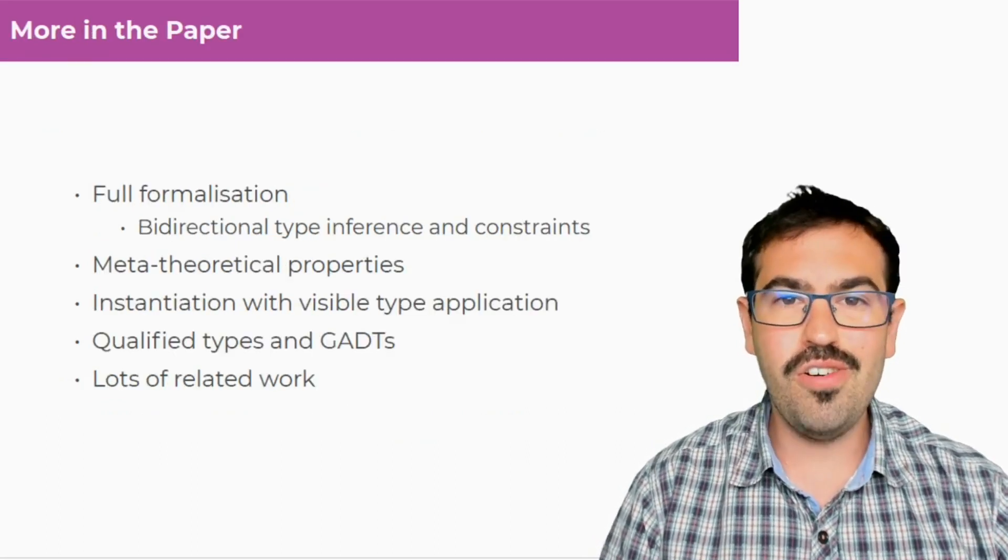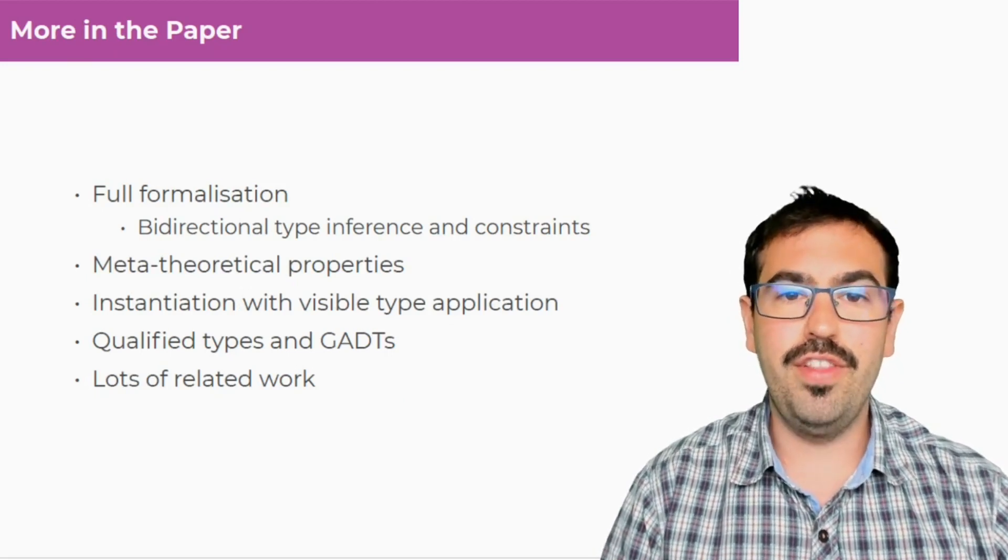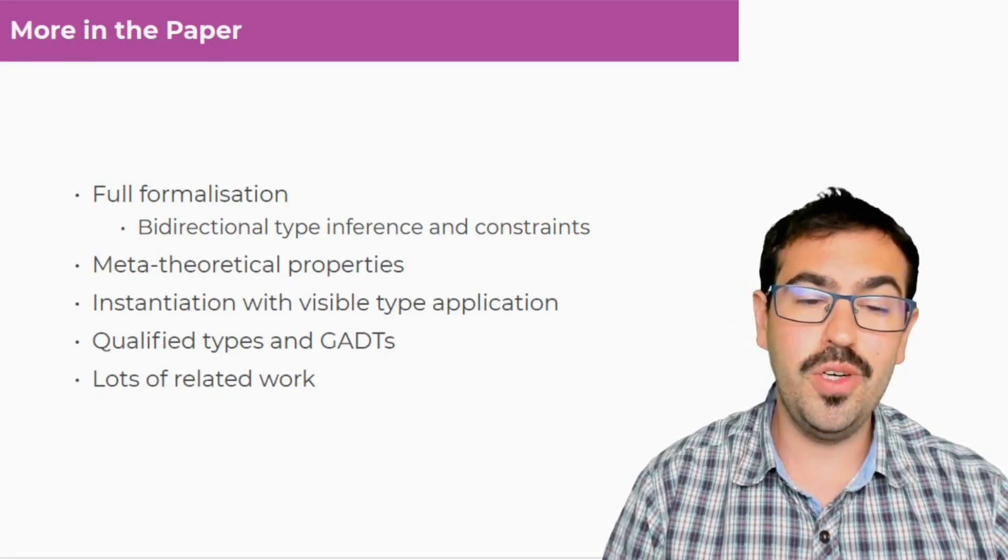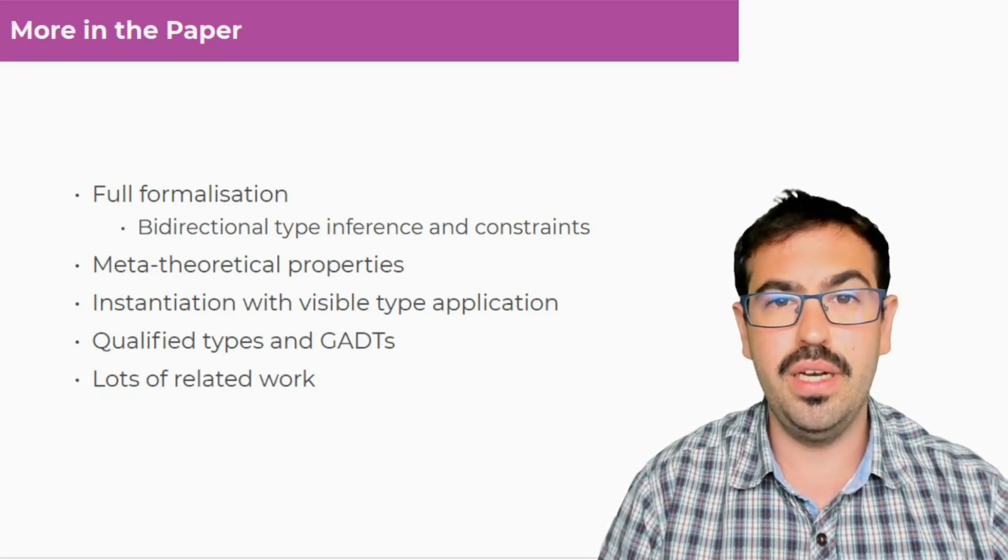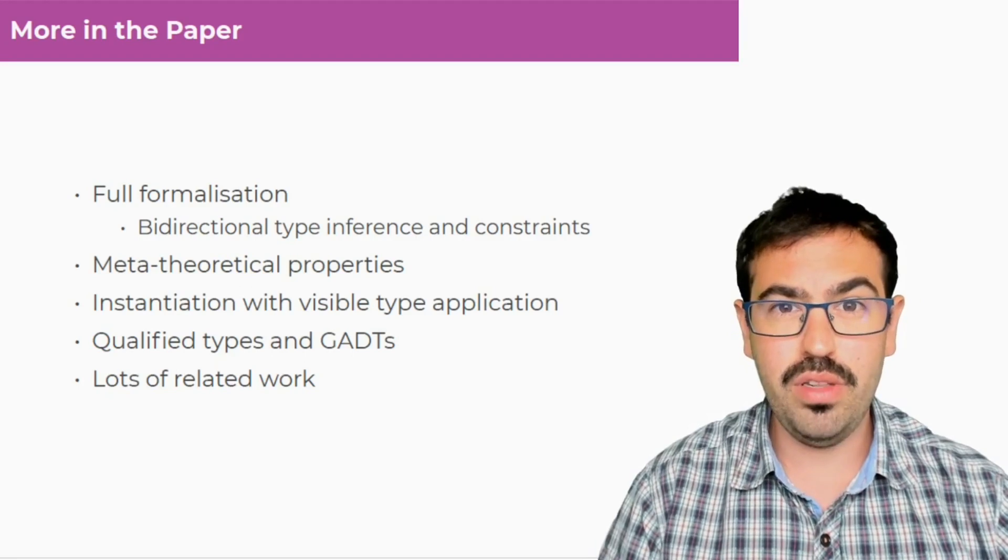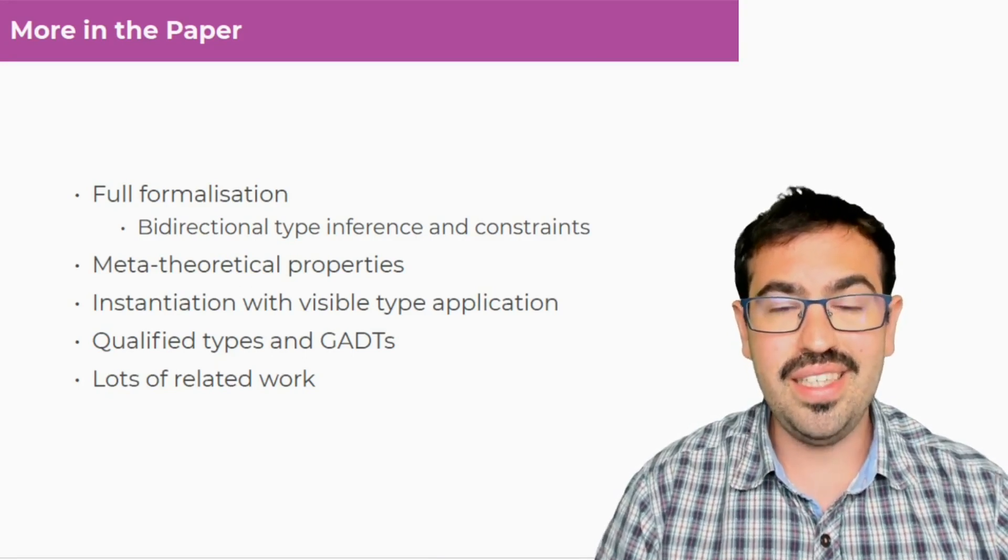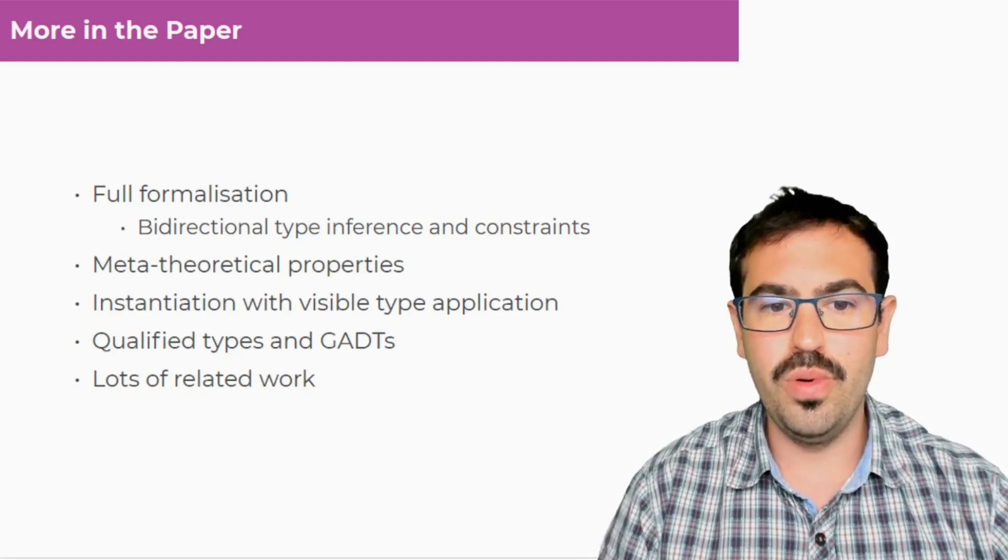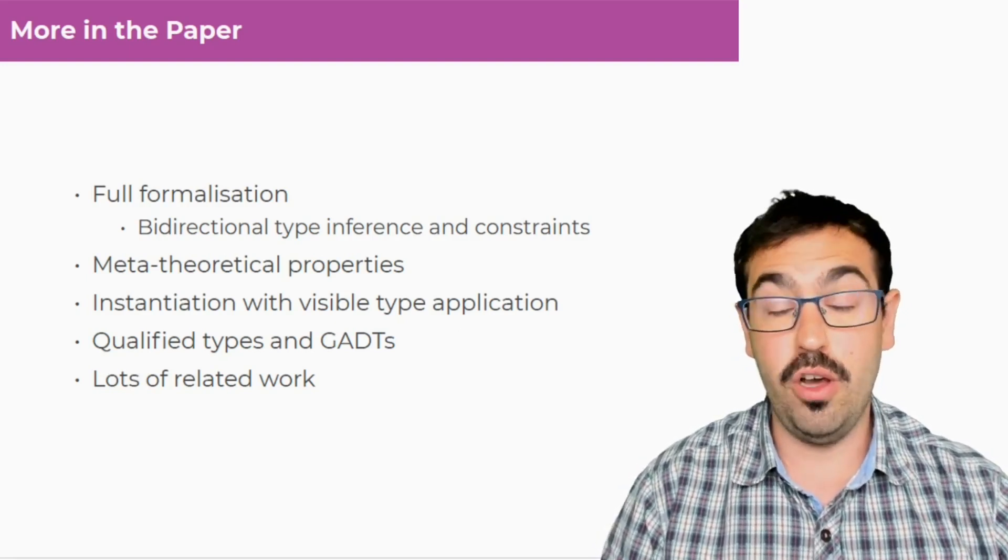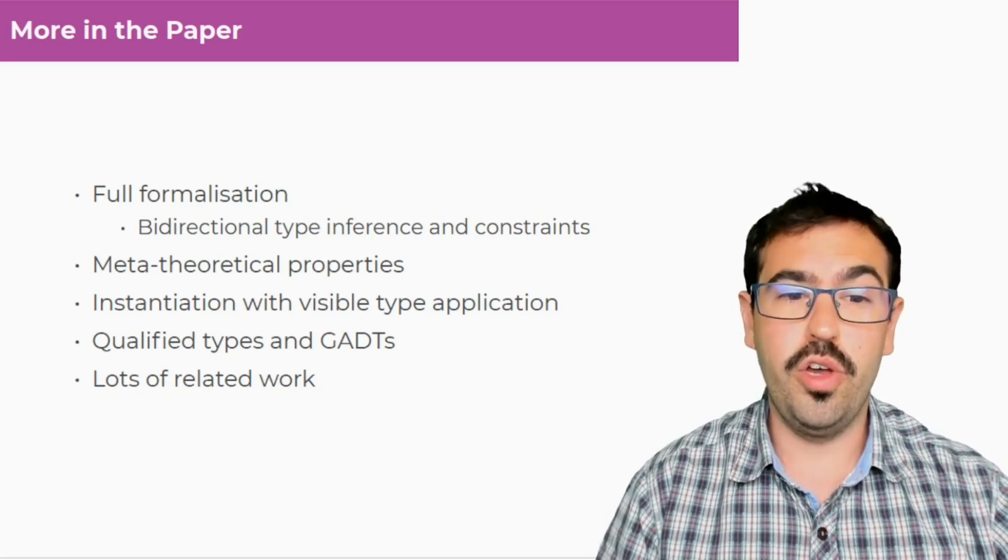Of course, I encourage you to read the paper. There is more there. You have the full formalization. And actually, we think it's the first time that bidirectional type inference and constraints have been written down in a paper. This is what was inside GHC. But there was nothing written about how you integrate all of this together. And on top of that, we built QuickLook impredicativity.